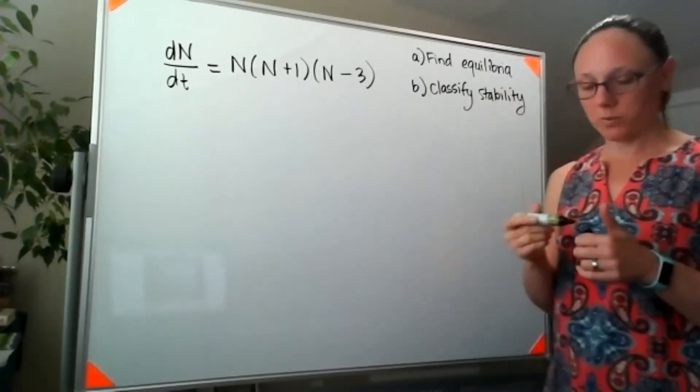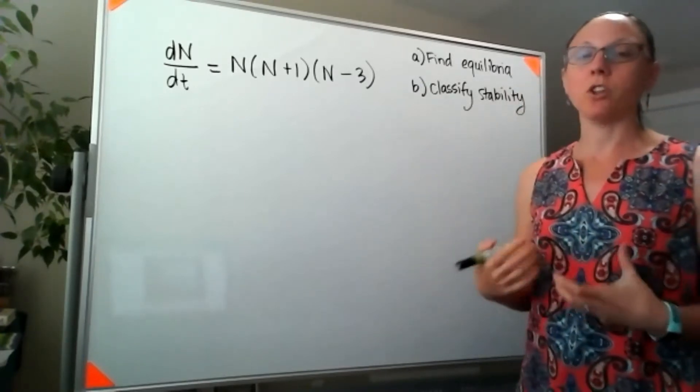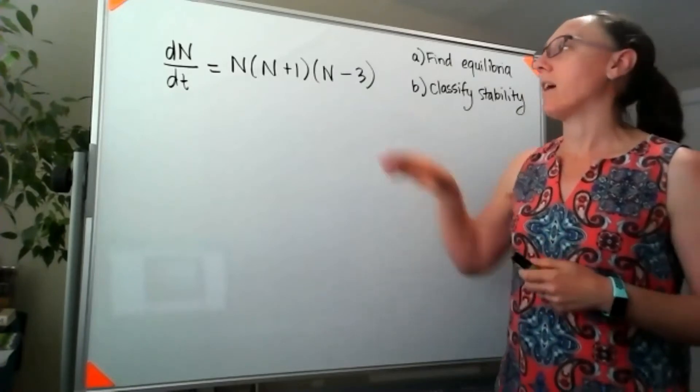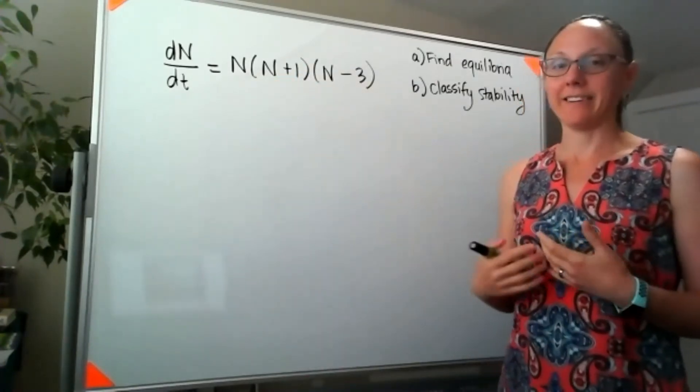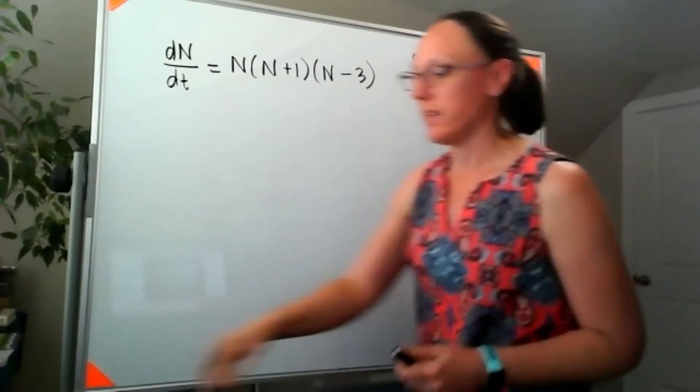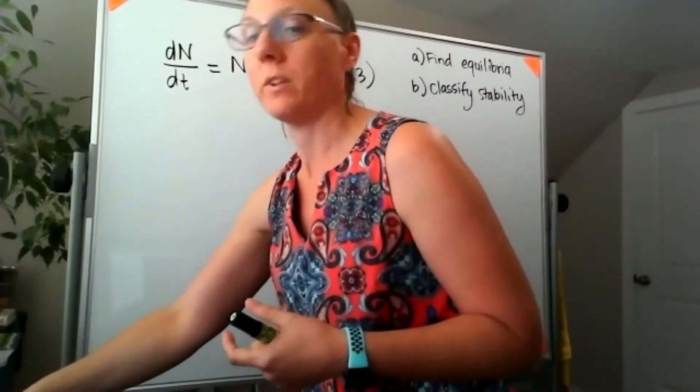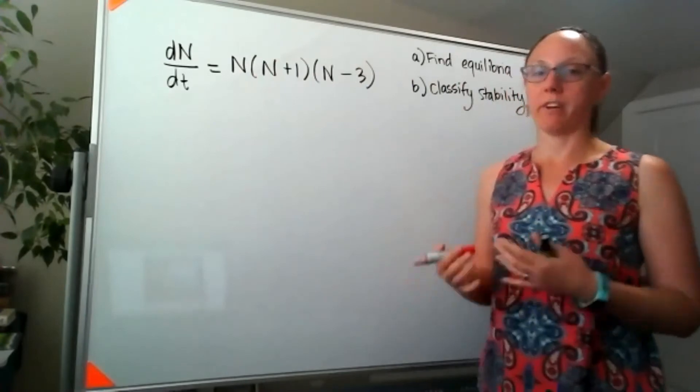Finding the equilibria really means we're looking for the places where our value of n is not changing, meaning dN/dt is equal to zero. So when you hear that phrase find equilibria, think set the derivative equal to zero.